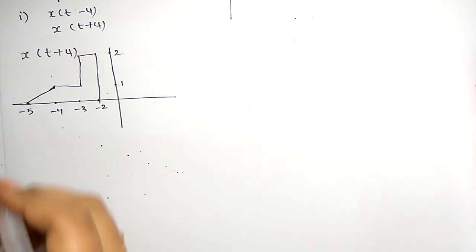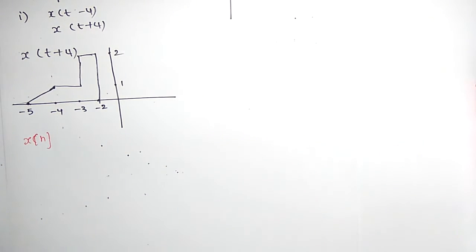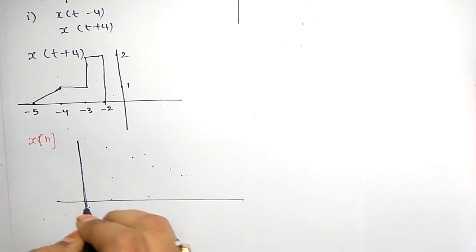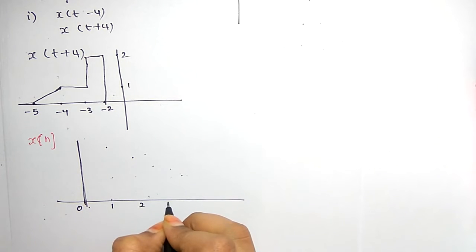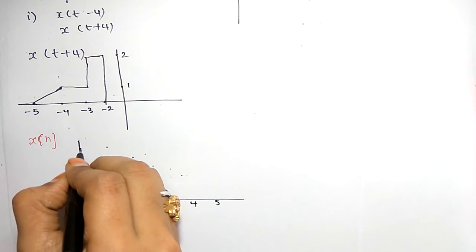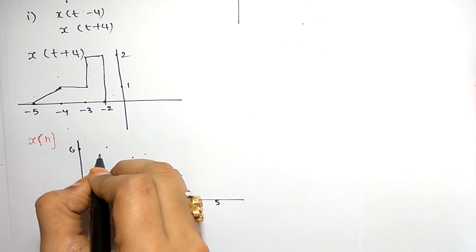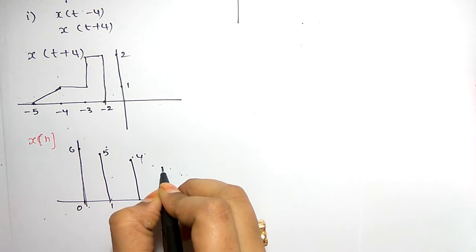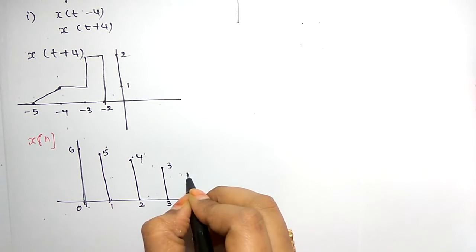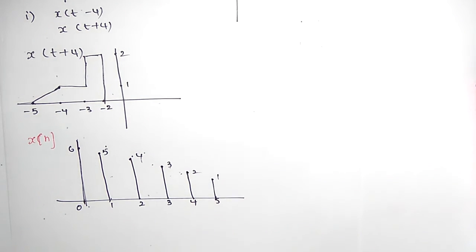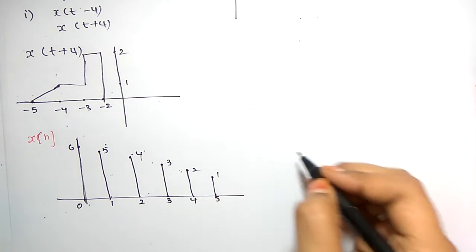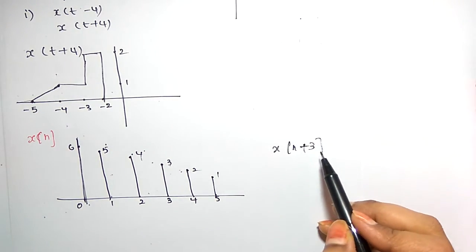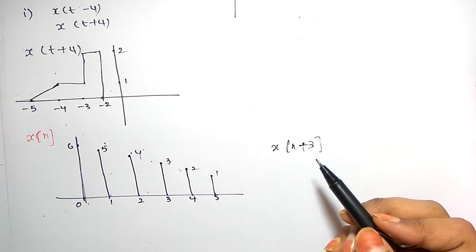Now consider a discrete function X(n) with values at n = 0, 1, 2, 3, 4, 5, 6 being 5, 4, 3, 2, and 1. For this discrete function, let's compute X(n plus 3). Since n plus 3 means it should be shifted to the left by 3 units.